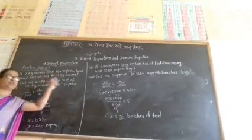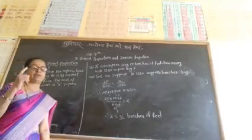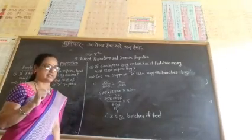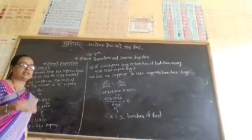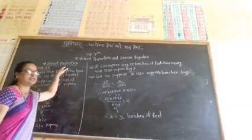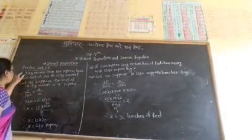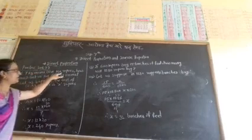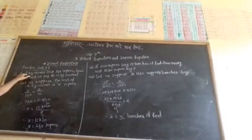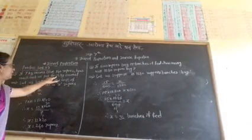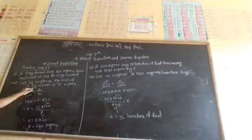If 7 kg onions cost 140 rupees, how much cost do we pay for 12 kg onions? Let us suppose the cost of 12 kg is x. We set up the proportion: 7 kg costs 140 rupees, and 12 kg costs x rupees.